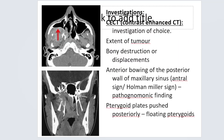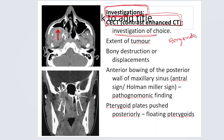Now coming to investigations. The first investigation to mention is contrast-enhanced CT of the paranasal sinuses — this is the investigation of choice. A CT scan shows bony windows very well, and because this is a vascular tumor, there will be contrast enhancement of the tumor, unlike non-vascular tumors. This allows you to see the extent of the tumor and bony displacement clearly.